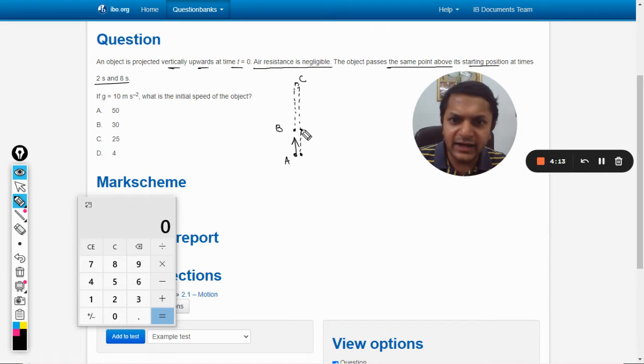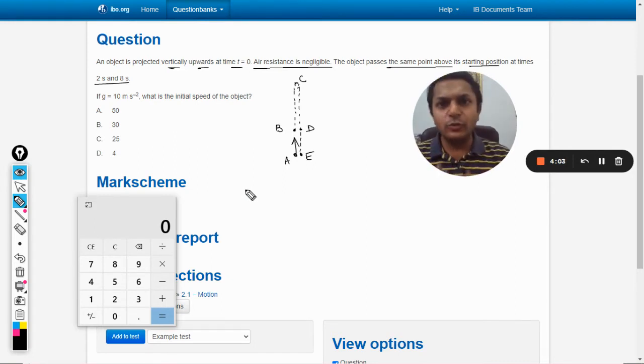And then it reaches back to the point D and then it reaches back to the point A, that is E. So this is the total journey - it moves from A to B to C to D and then to E.